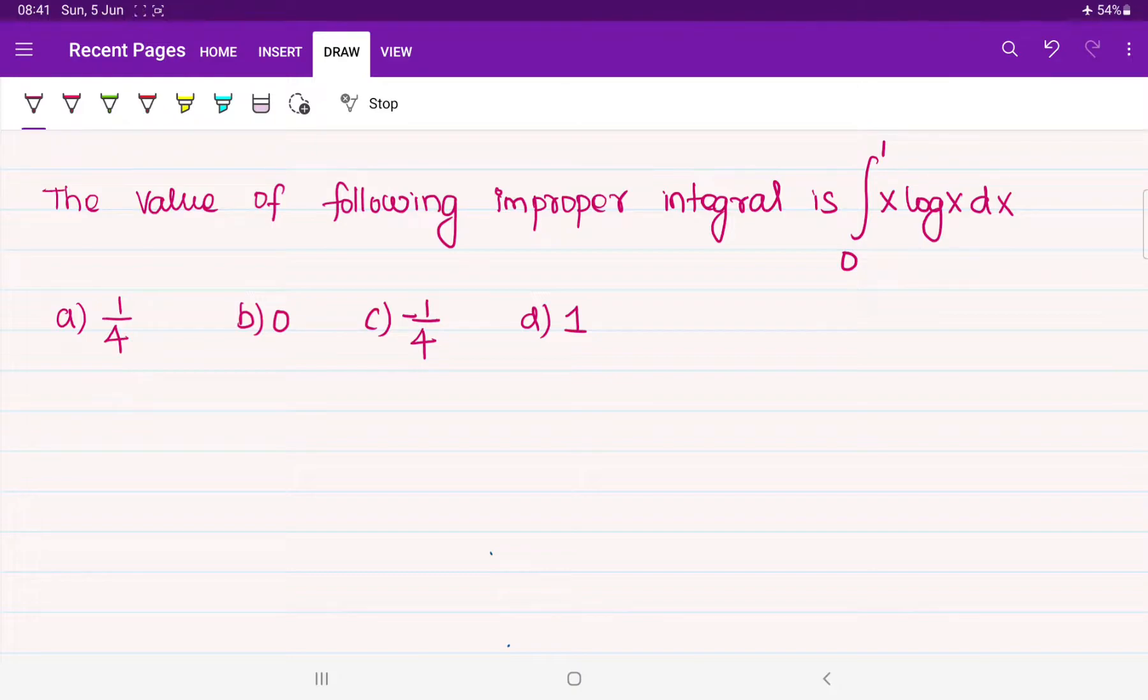By parts means uvdx. Integral of uvdx. I have written the formula and approached it step by step. If you go with the same procedure, you will get the answer. But prior to that, observe the statement of the question. They told something to learn here: the value of the following improper integral. What is the actual meaning of improper integral?